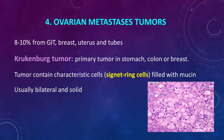The last type is secondary metastatic ovarian cancer, accounting for 8 to 10% of cases, originating from the GI tract, breast, uterus, and tubes. This is called Krukenberg tumor. The primary source is most commonly the stomach, then colon or breast. Histopathologically, the tumor contains characteristic signet ring cells — cells filled with mucin — seen under the microscope. Krukenberg tumors are usually bilateral and solid.